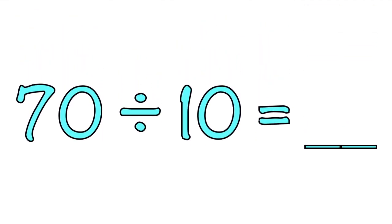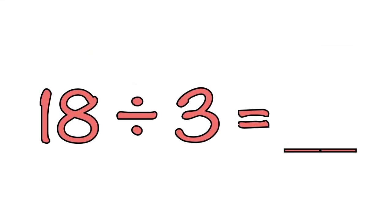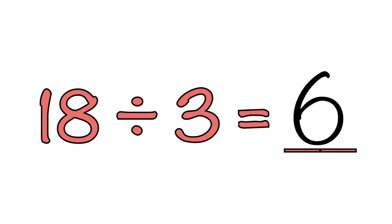How about 70 divided by 10 equals blank? The quotient is 7! Let's skip count by 10 until we reach 70 — 10, 20, 30, 40, 50, 60, 70. That is 7. How about 18 divided by 3 equals blank? The quotient is 6! Let's skip count by 3 until we reach 18 — 3, 6, 9, 12, 15, 18. That is 6.